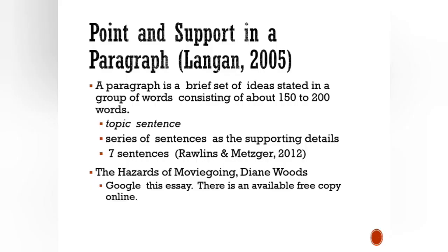Point and support in a paragraph: by Langan (2005), a paragraph is a brief set of ideas stated in a group of words consisting of about 150 to 200 words. It consists of a topic sentence followed by a series of sentences as supporting details. It is suggested by Rollins and Metzger (2012) that a paragraph, to be concise, should be in seven sentences — because cognitive psychologists say the average human brain can only process at least seven items. I suggest a paragraph should be at least four to seven sentences.